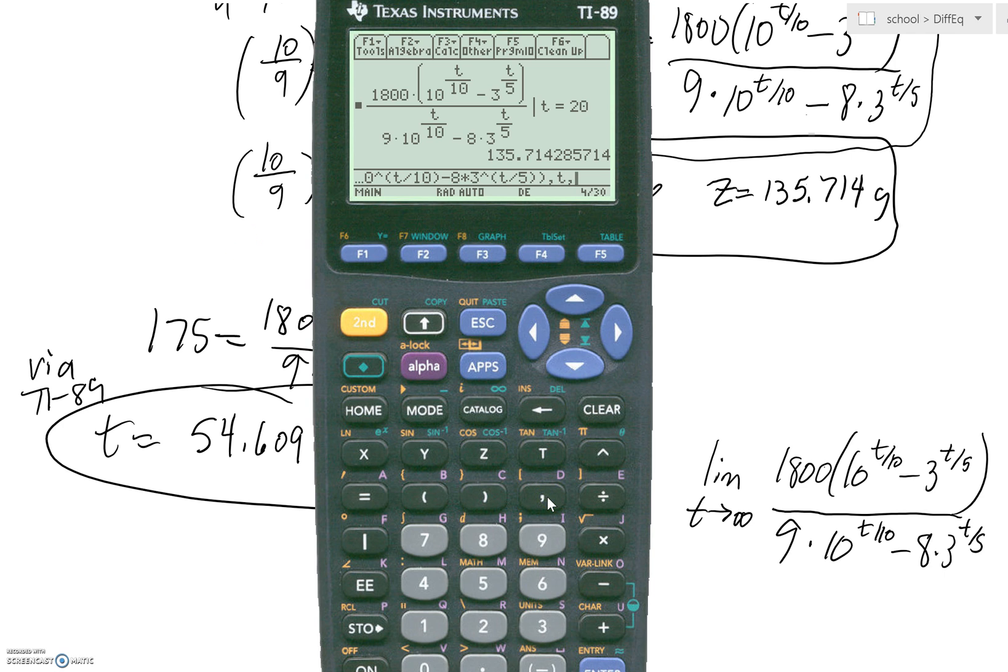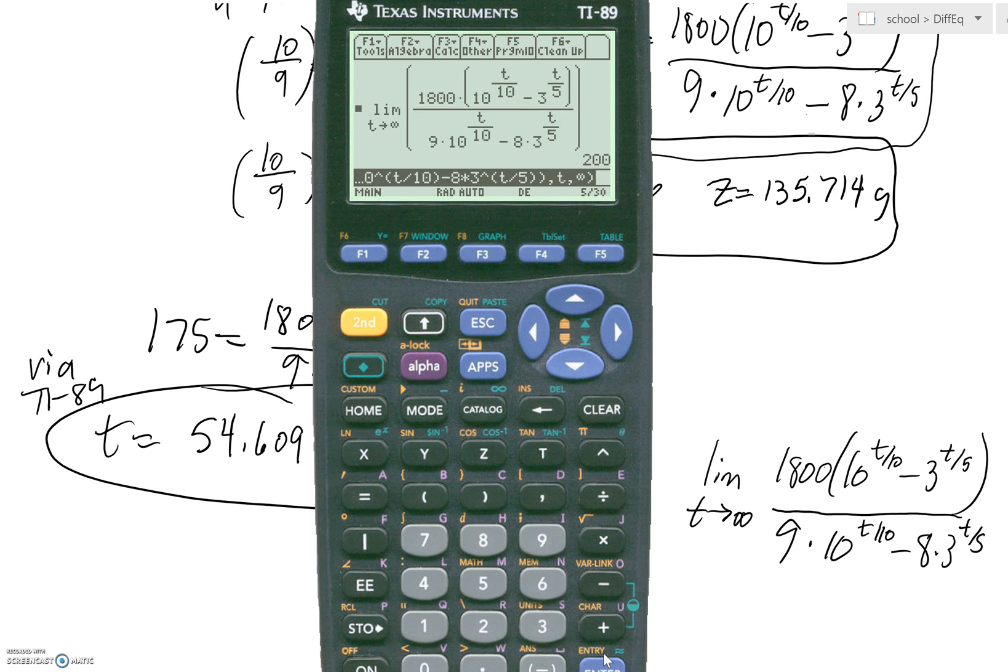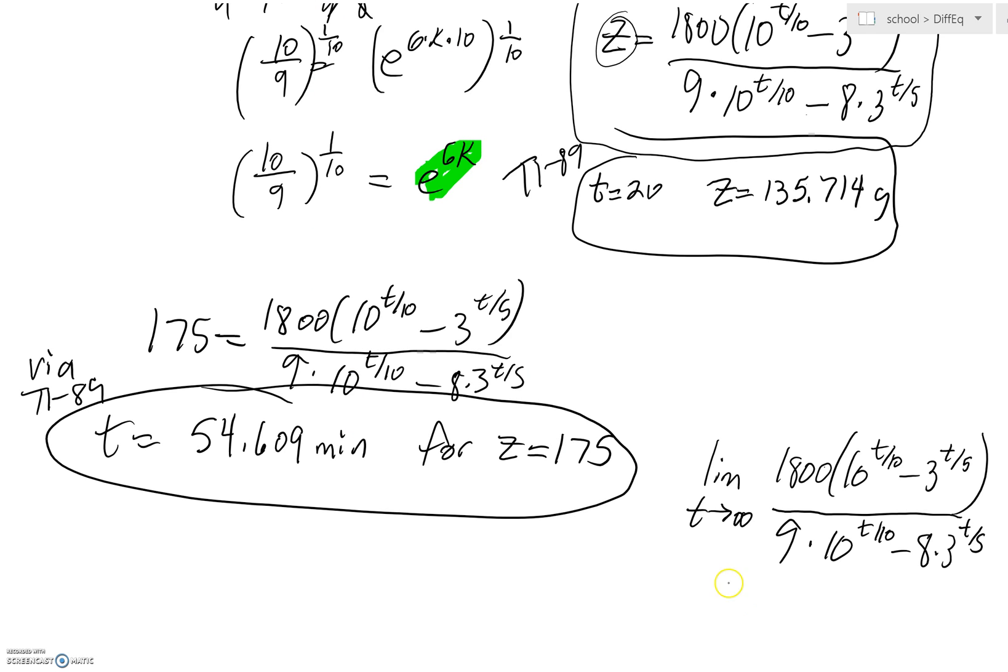But then I have to give the value that T approaches, and that's infinity. Look at the catalog button right here. Right above catalog is infinity. And you could let this think for a little bit. This limit, you're going to get 200. So, the limit as T goes to infinity of Z equals 200.